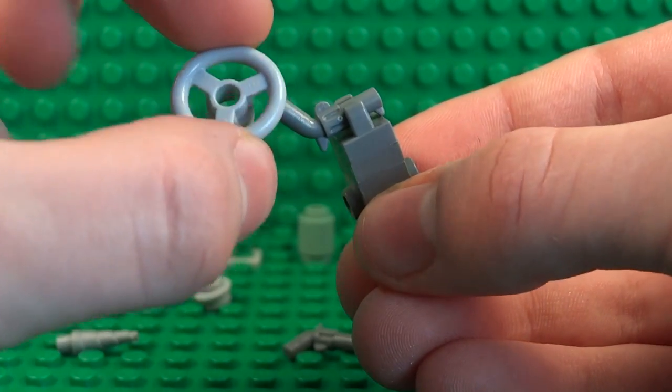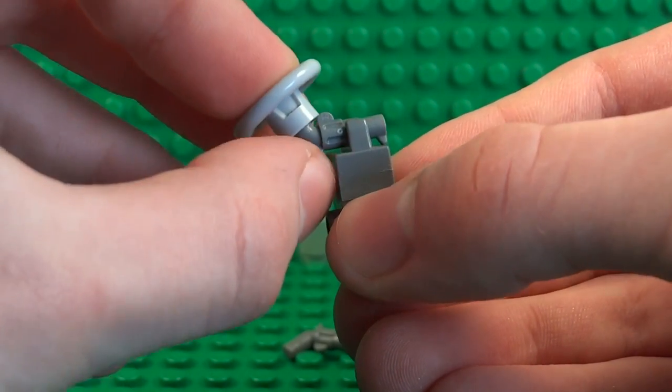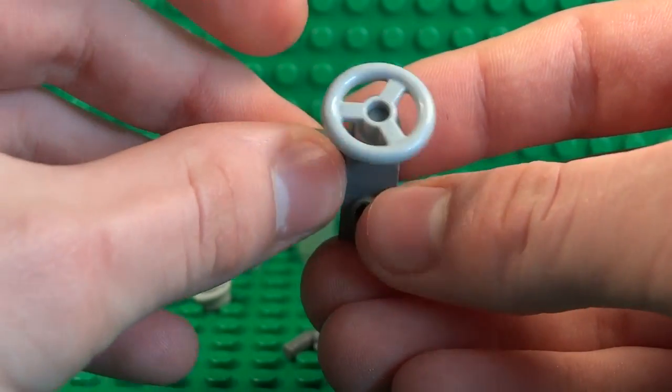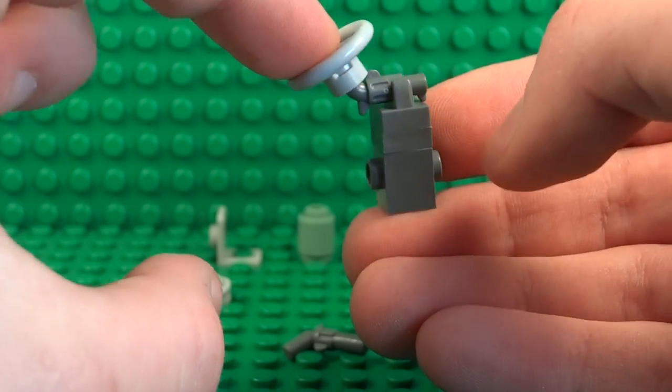And this provides a good angle for the valve at the top of the oxygen tank. And for that you should use a Lego steering wheel, and although it's a little bit oversized for the scale of the minifigure, it still looks really cool and definitely looks like a valve.